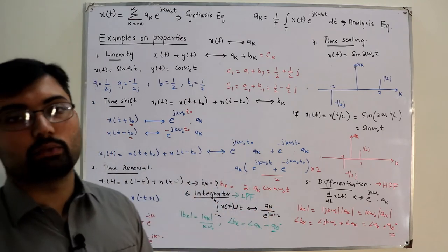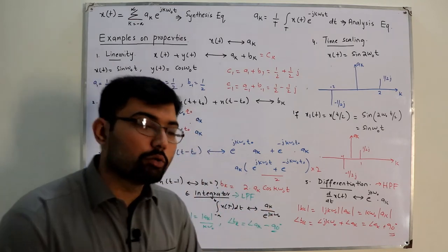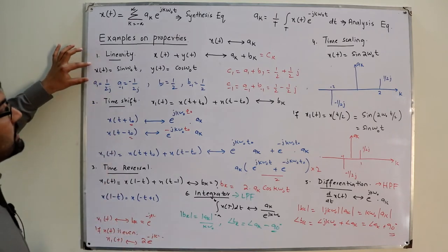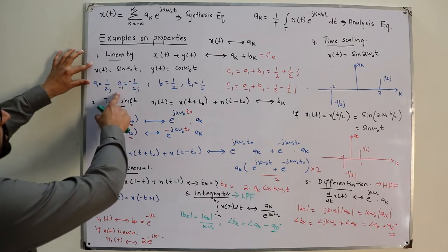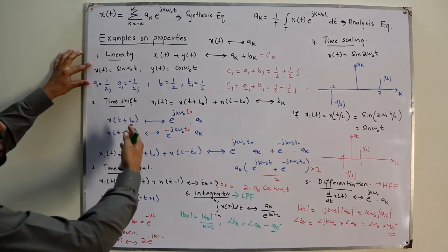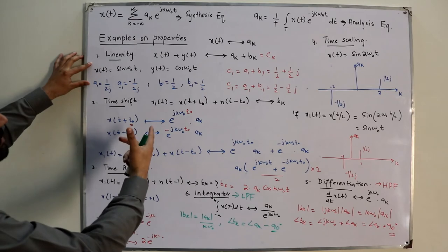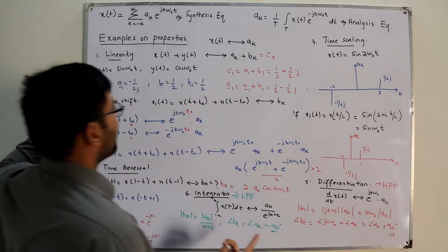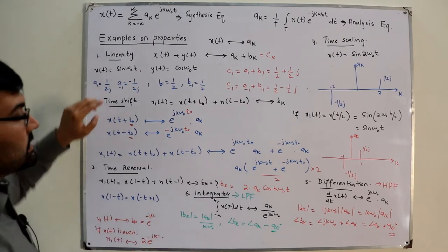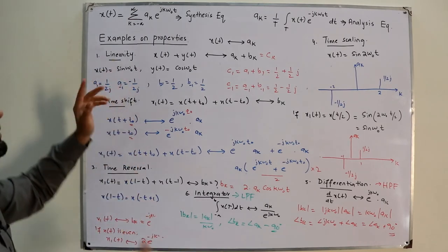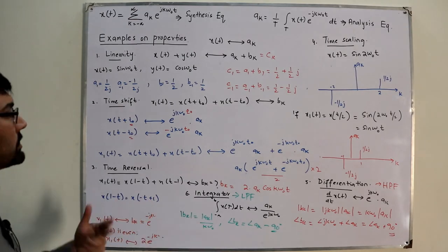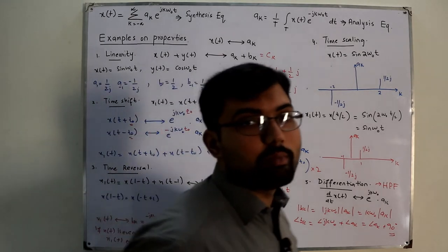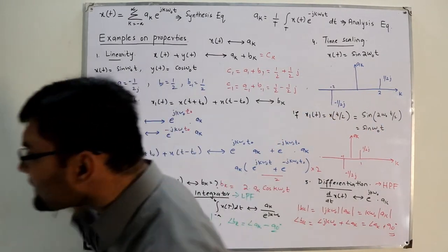The integrator acts as a low-pass filter; the differentiator is a high-pass filter. As an example: sine(ω₀t) has two Fourier coefficients. Taking the derivative gives cos(ω₀t), so those coefficients are multiplied by jkω₀. Taking the integration of sine gives -cos, and the coefficients are divided by jkω₀.